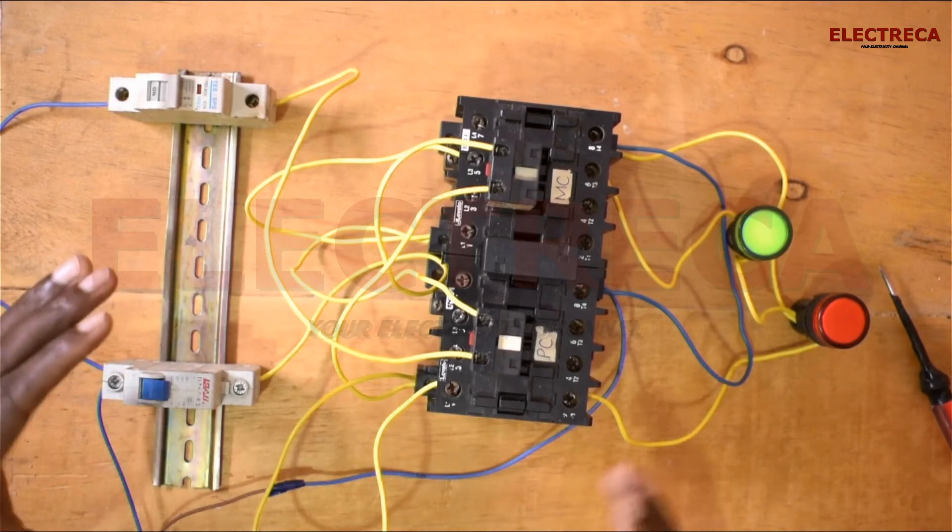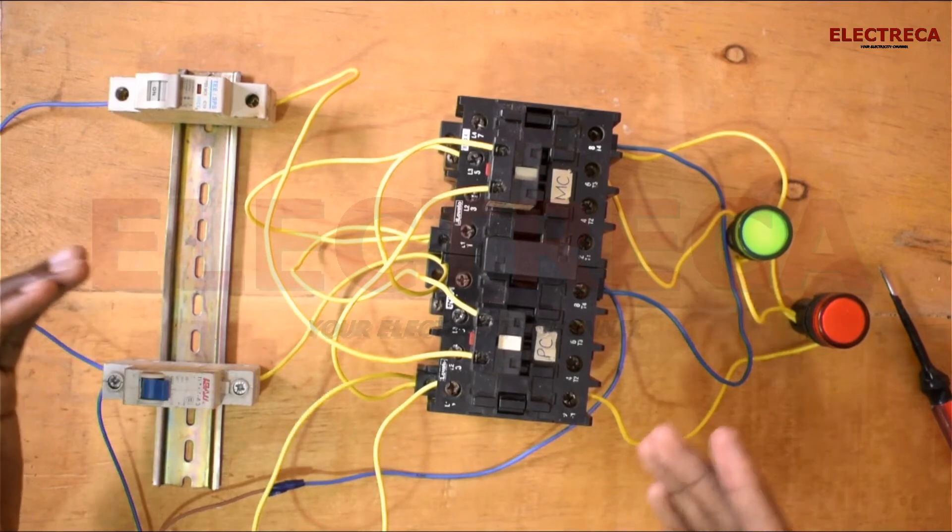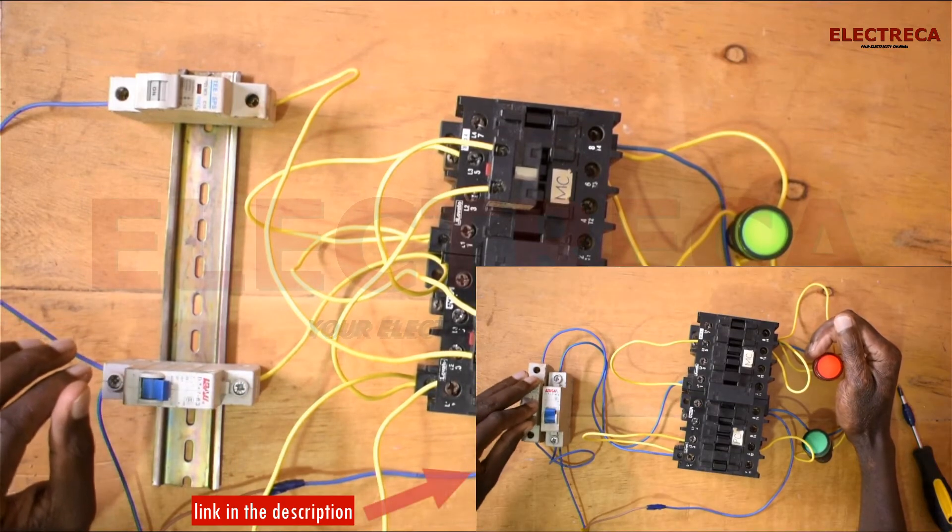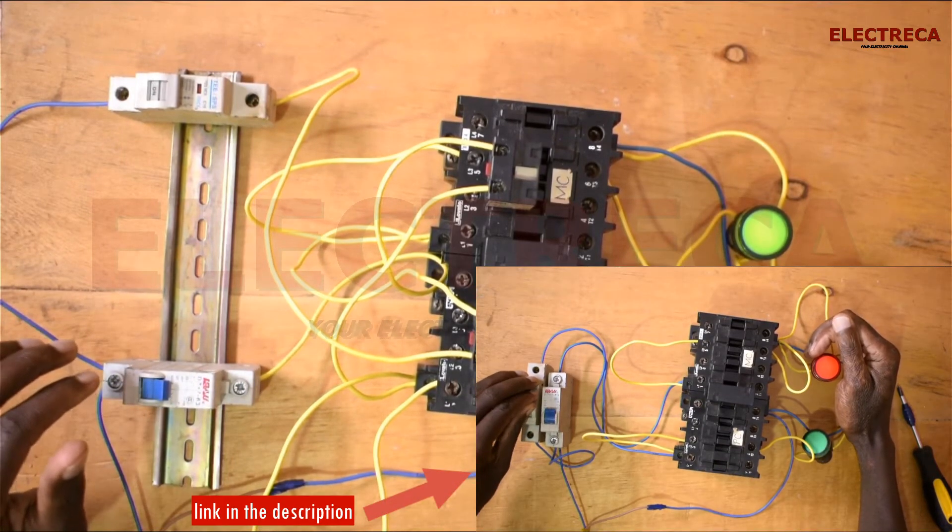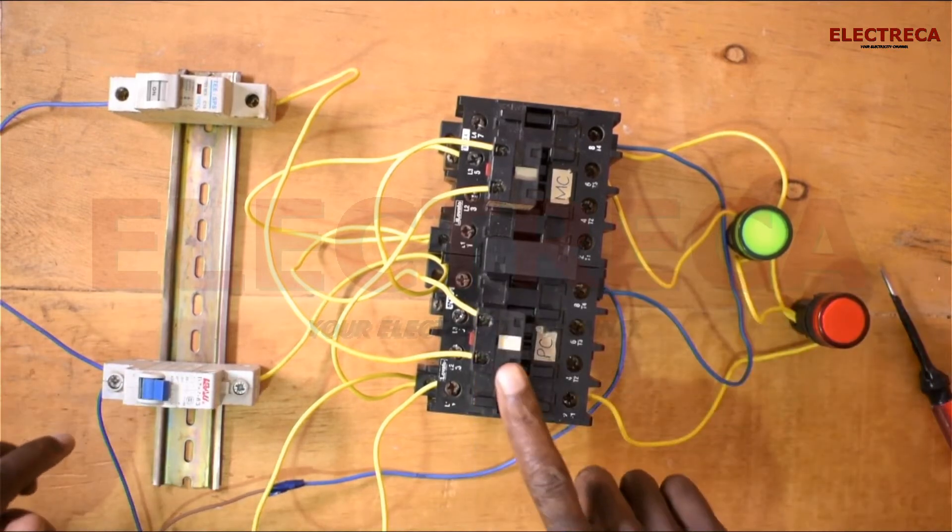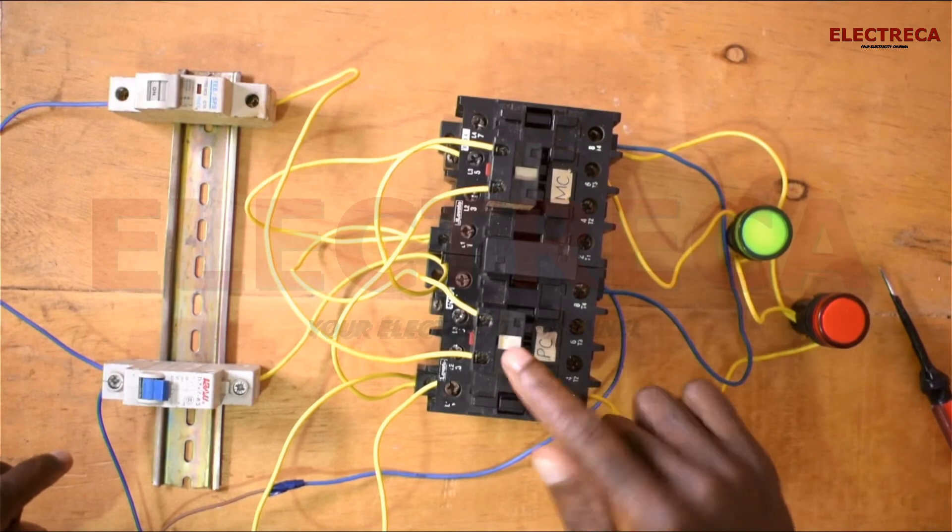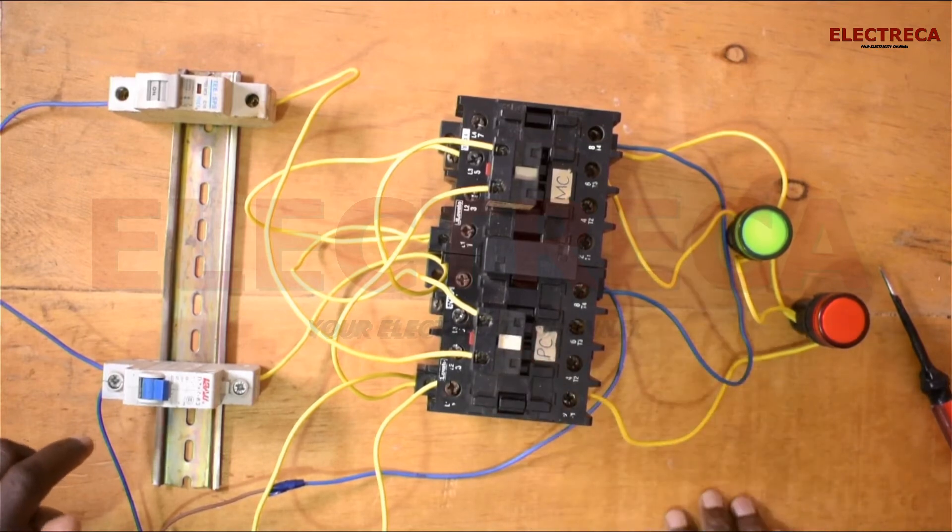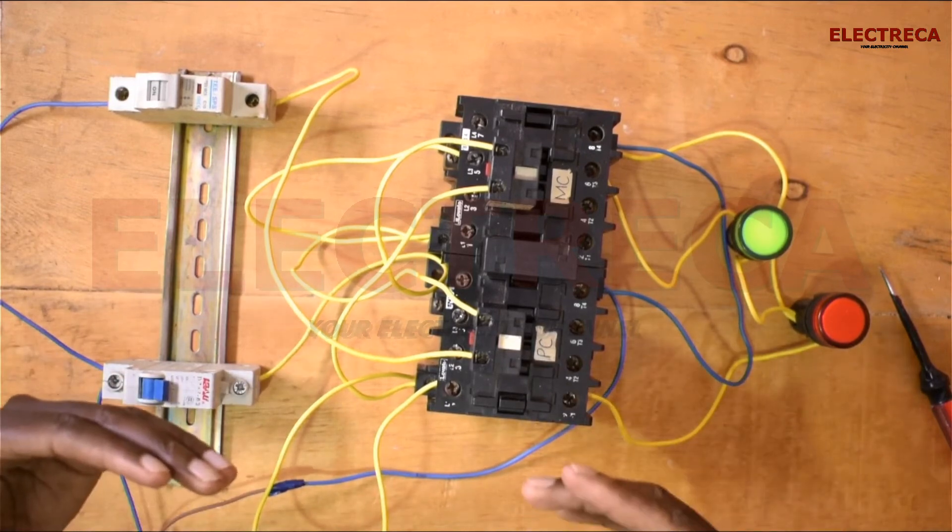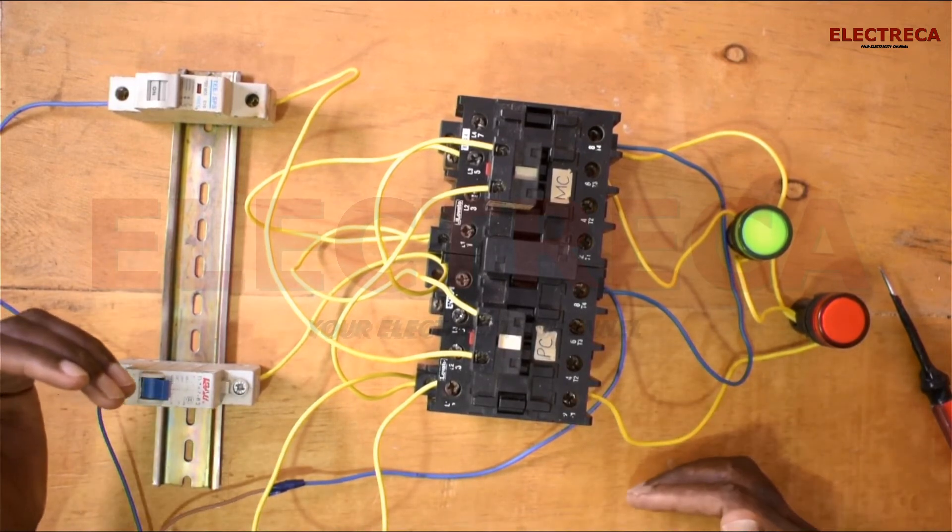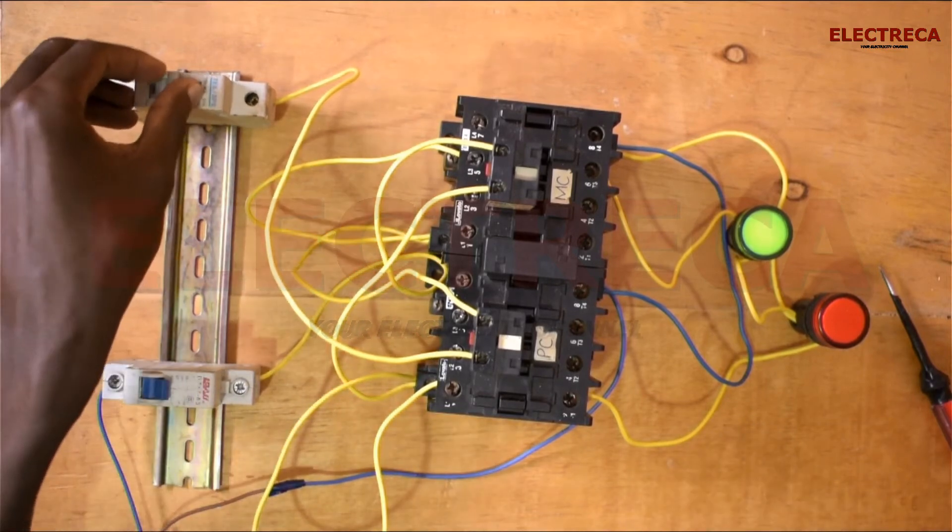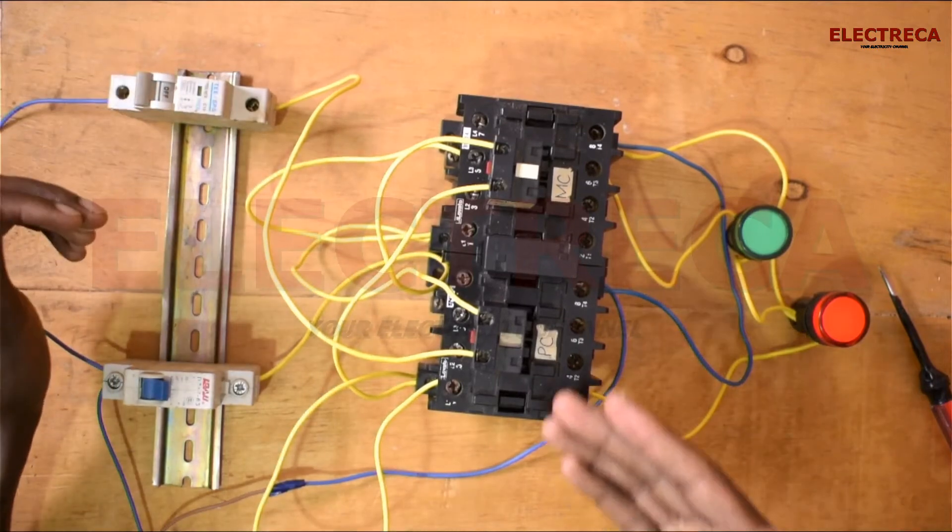When we were talking about interlock, we realized that when we engage both contactors, you see that one contactor is energized and the other one is struggling. The coil struggles to energize, and I told you that can really burn the coil. But because we've now added the electrical interlock, we don't experience that because already the power to the backup contactor has been cut.